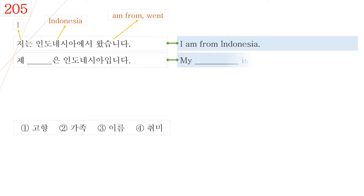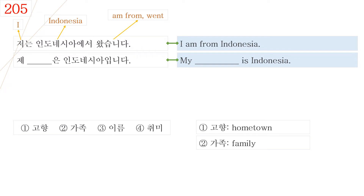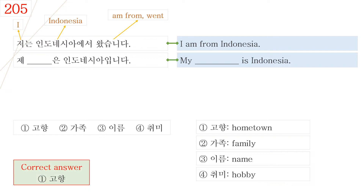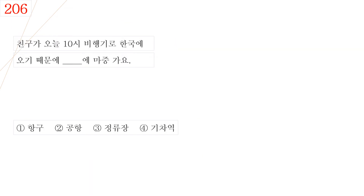The second dialogue means my something is Indonesia. Let's see the answer words. No. 1 is 고향, it means hometown. No. 2 is 가족, it means family. No. 3 is 이름, it means name. No. 4 is 취미, it means hobby. So the correct answer is No. 1, 고향. Let's read it again: 저는 인도네시아에서 왔습니다. I'm from Indonesia. 제 고향은 인도네시아입니다. My hometown is Indonesia.